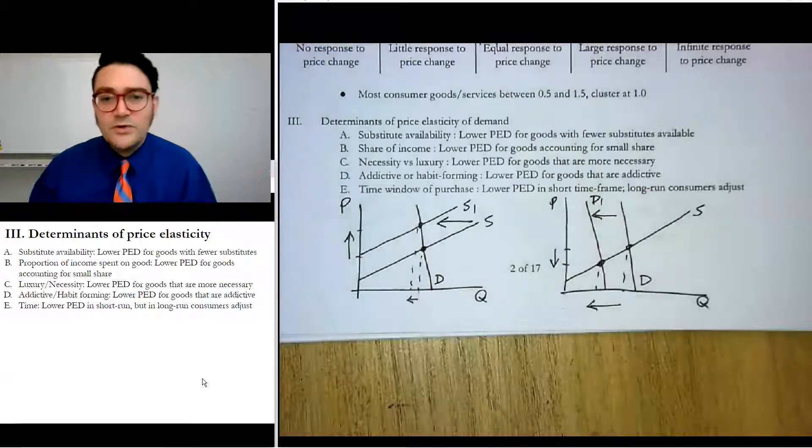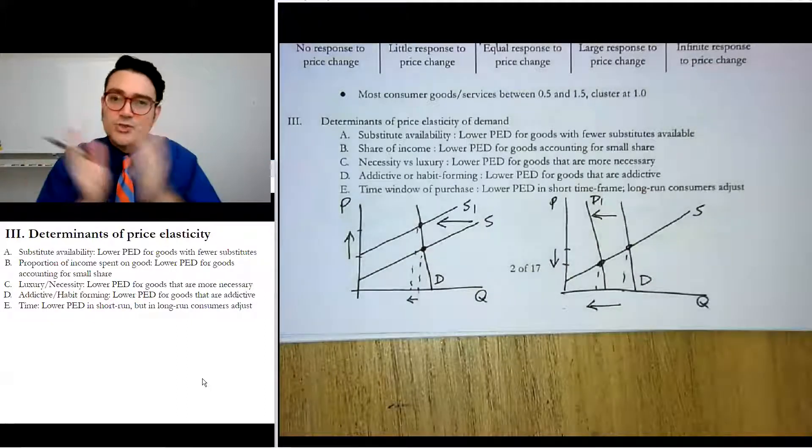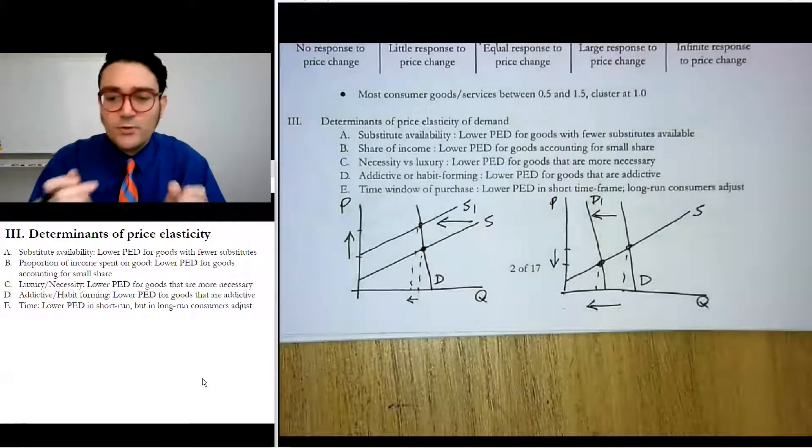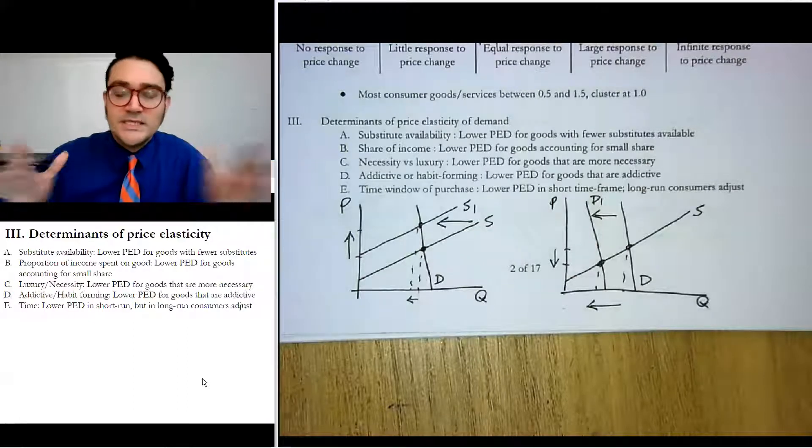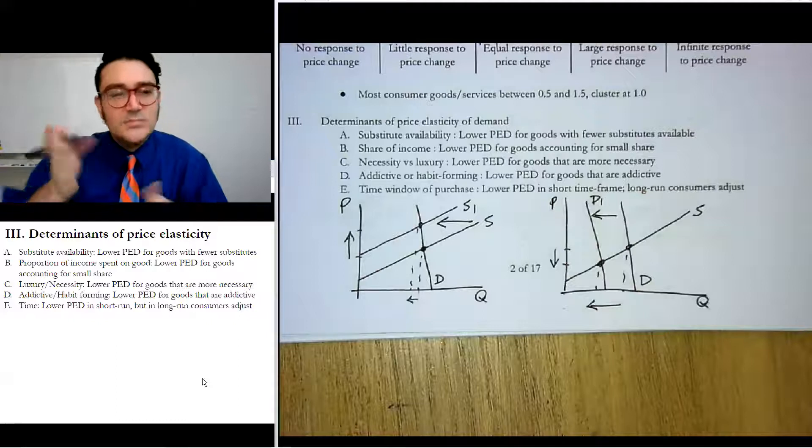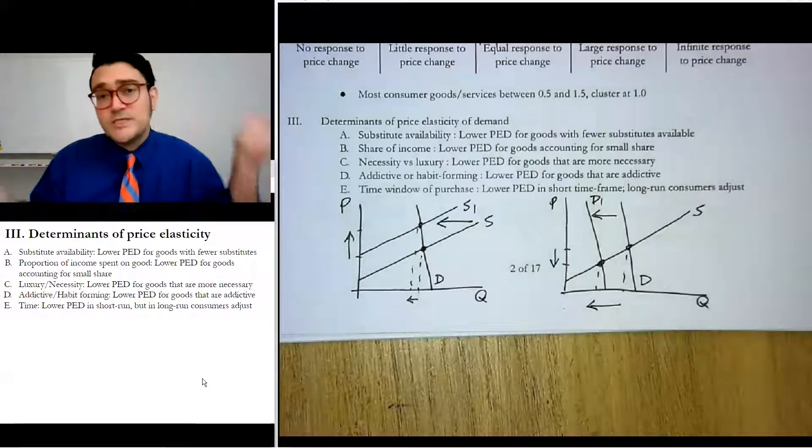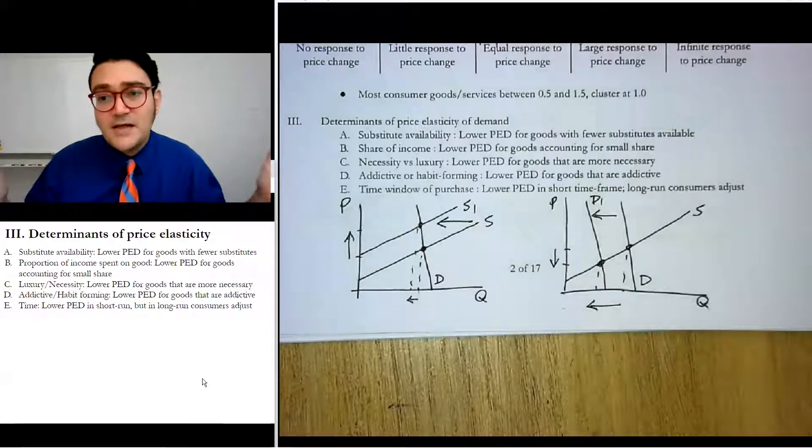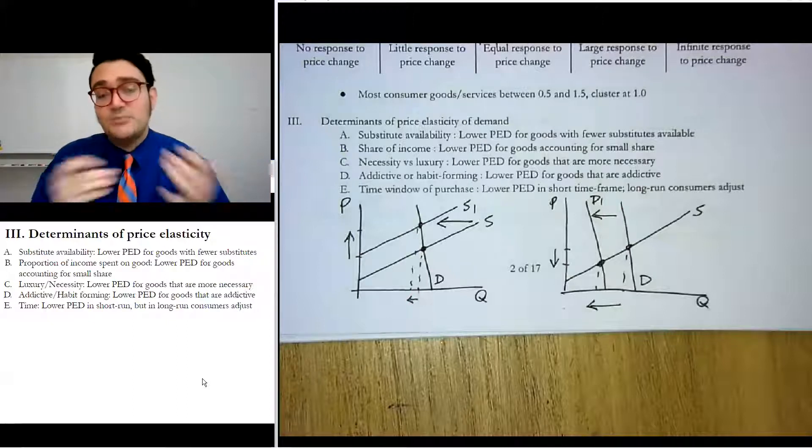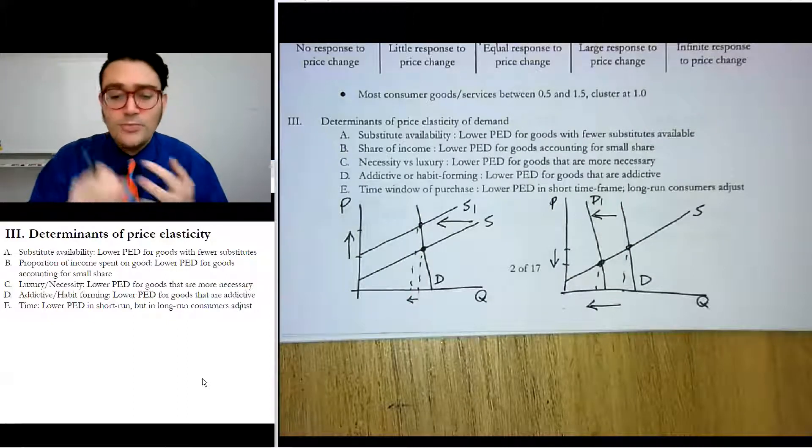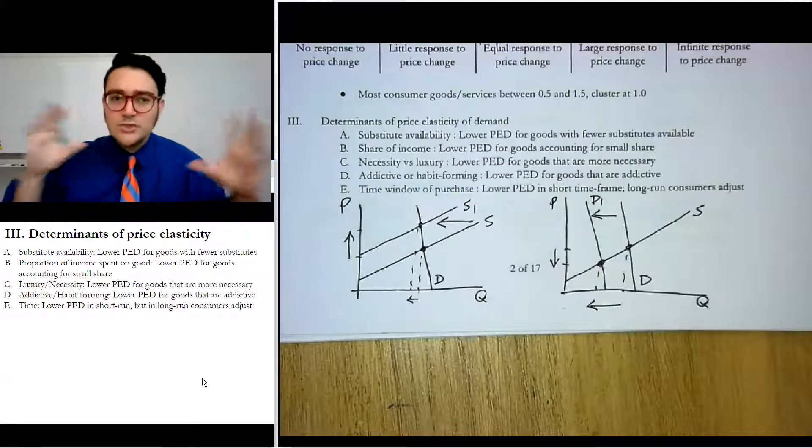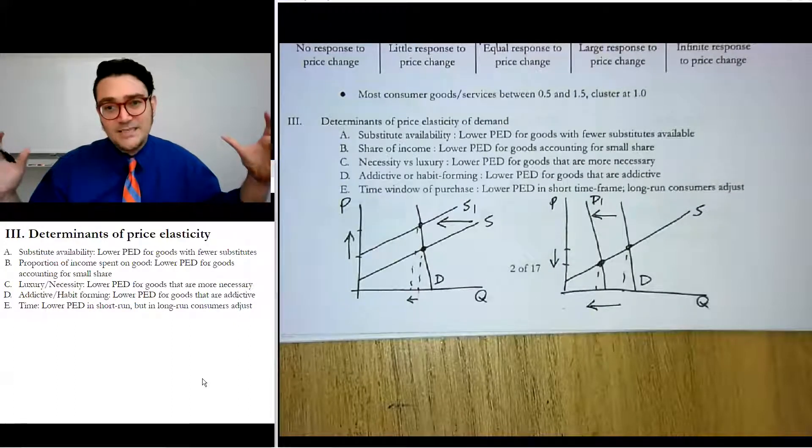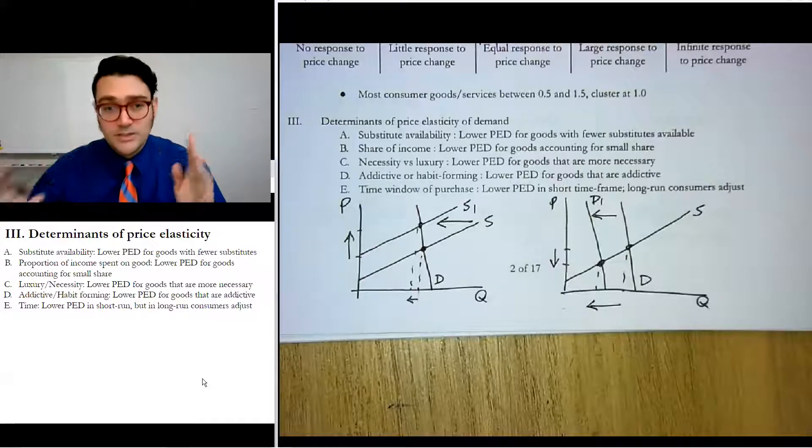Last one is time window of purchase. That's the idea that in a short run, if you're in a car, you're driving to work and you're like, I need gas, then you have to pay what the price is. You're almost inelastic. But if you're given enough time, gas prices could go up three, four, five dollars a gallon. You have enough time to adjust. You could buy a more fuel efficient car. You could get a carpool. You could ride a bike. You could walk. So given more time, consumers generally have more elastic demand for products, even the same product.